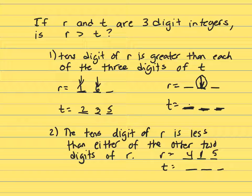So, this is the biggest of the two other digits in R. And then, we know that this number is less than either of the other two digits of R.